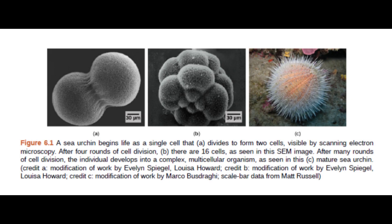Figure 6.1: A sea urchin begins life as a single cell that divides to form two cells, visible by scanning electron microscopy. After four rounds of cell division, there are 16 cells, as seen in this scanning electron microscopy image. After many rounds of cell division, the individual develops into a complex multicellular organism, as seen in this mature sea urchin.